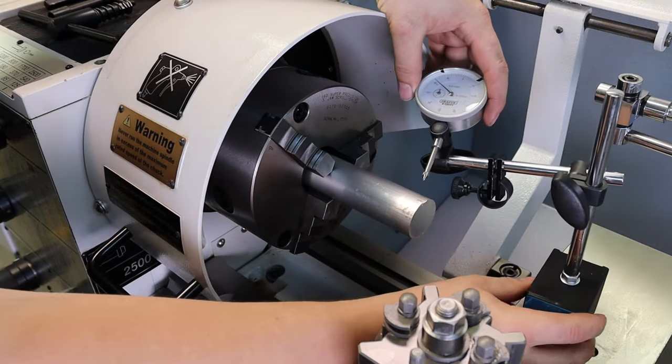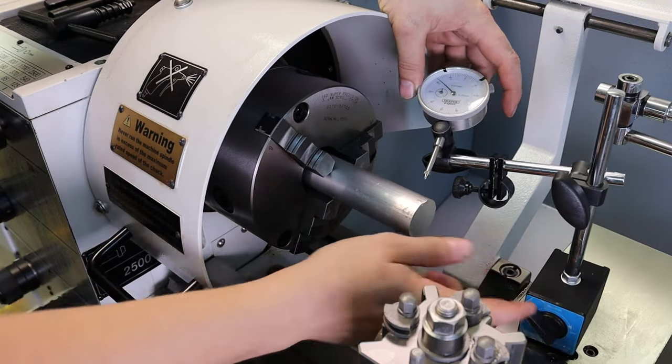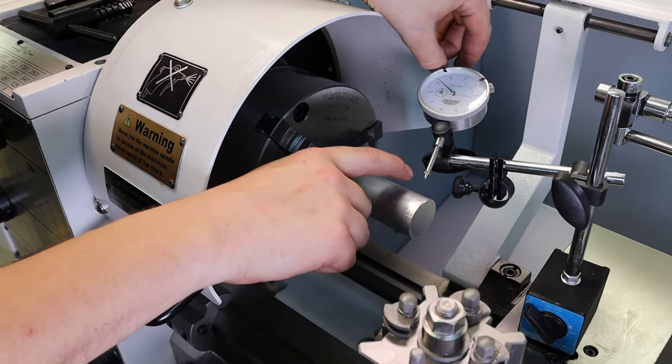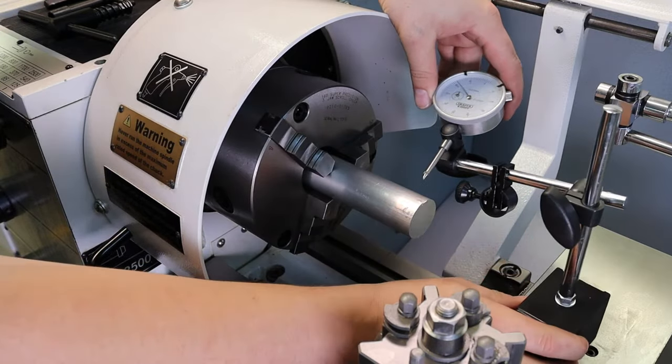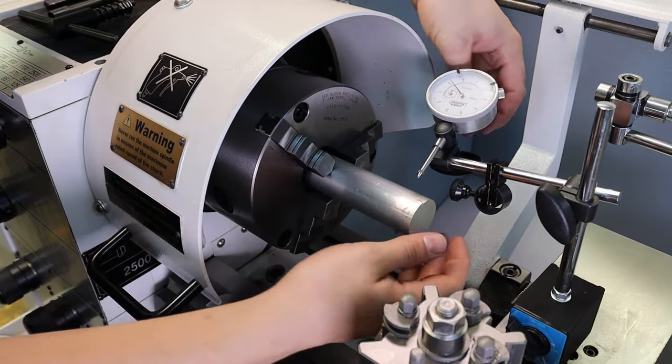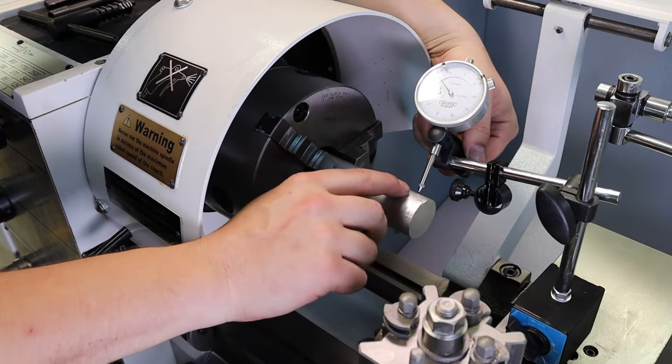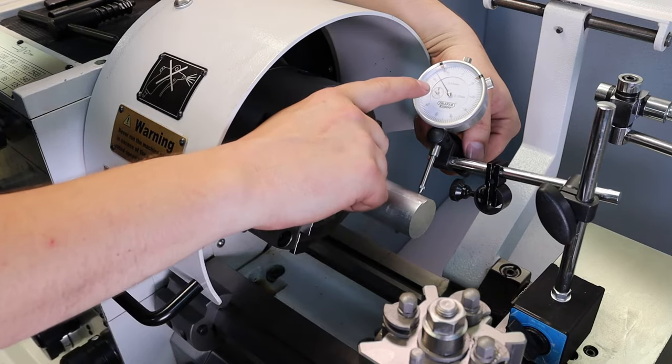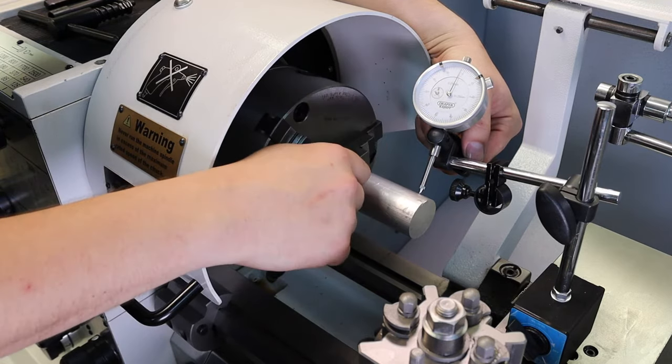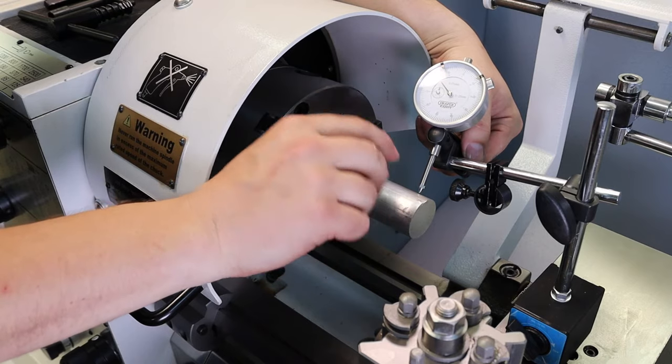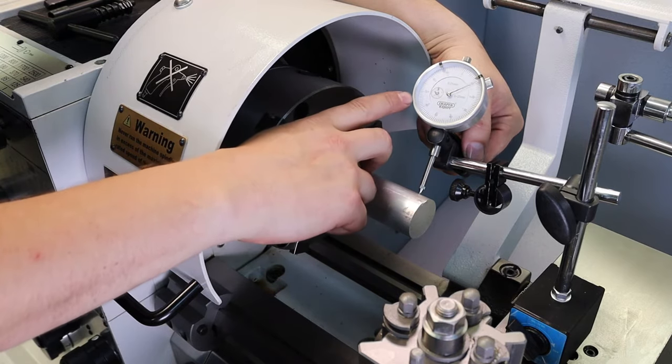The general idea is the magnet sits on a square base. In this case I've got it on the carriage, and I'm going to move the indicator into a position where I can just get the plunger on the tip of the indicator to just touch on the edge of my material. I want it to touch just so that the indicator starts to move, and you can see the gauge starts to move there. I want it to just move a tiny bit, maybe half a turn there like that.